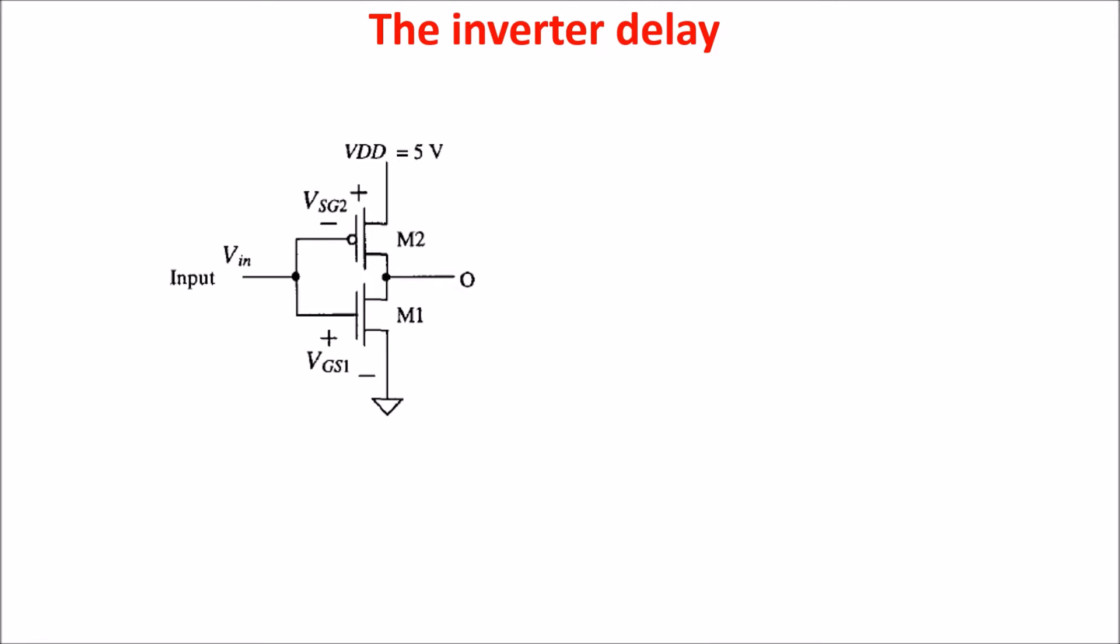Let's see the inverter delay. If we give a pulse of 5V to the input of the inverter, the NMOS M1 switches ON and the PMOS M2 switches OFF, so the output voltage goes to zero. The opposite happens when from 5V the input goes to zero, so in this case the output is connected with the 5V of the power supply.